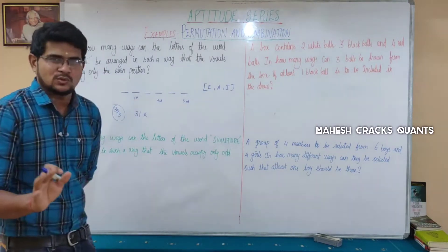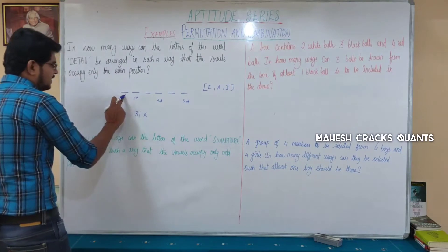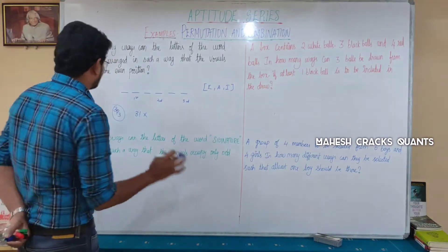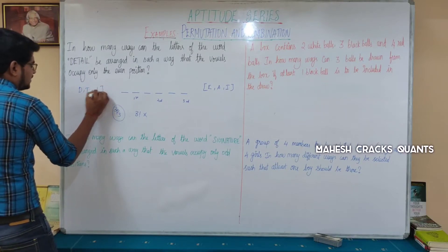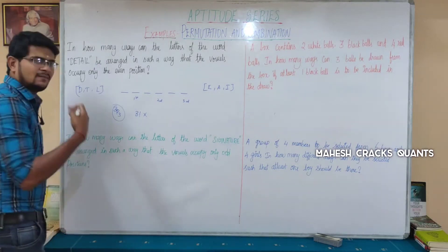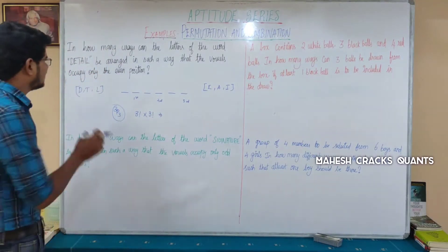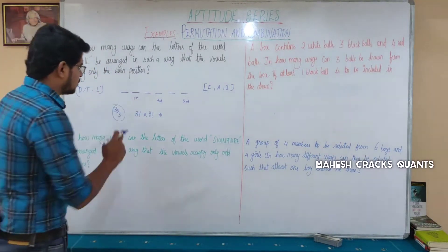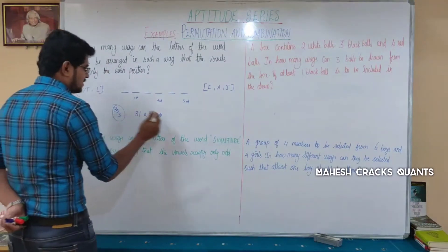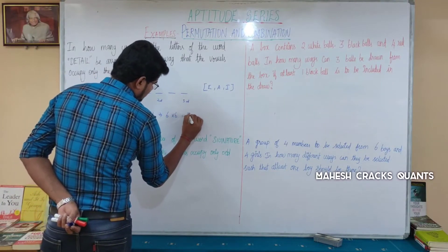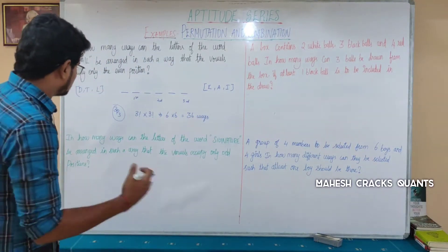So three vowels fill three even positions in three factorial ways. The remaining three letters fill the remaining three odd positions, also in three factorial ways. Three factorial is 3 × 2 × 1 = 6, and 6 × 6 = 36 ways.